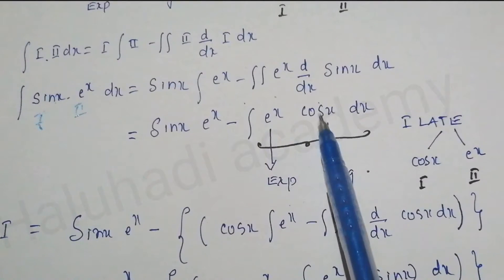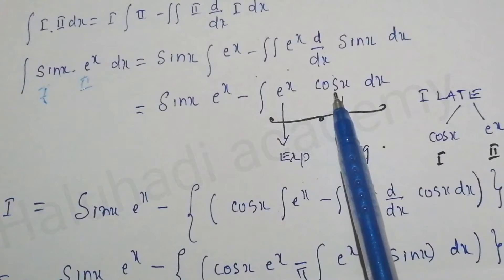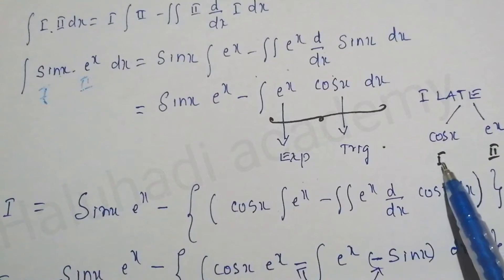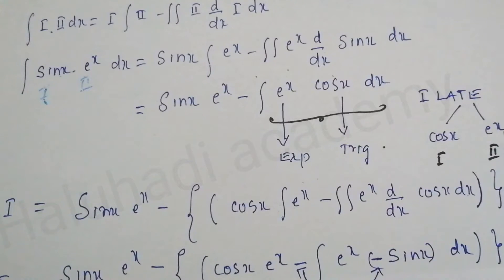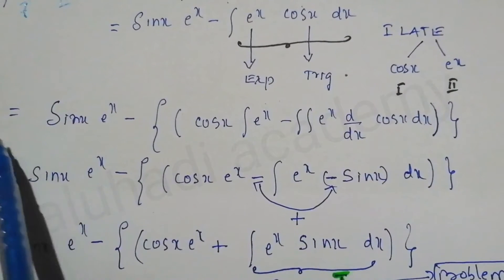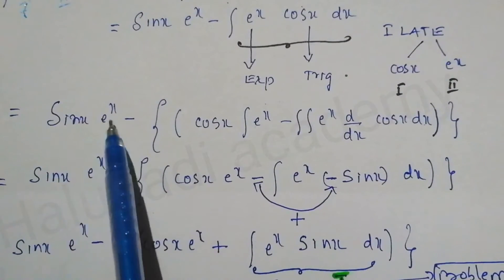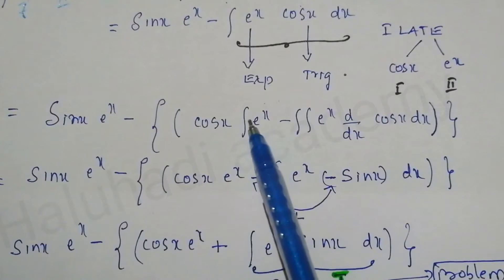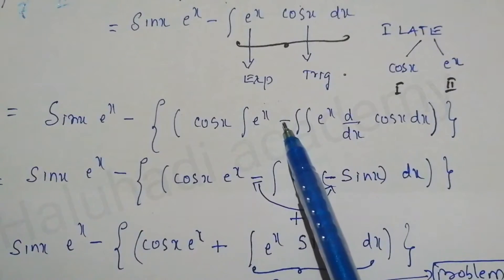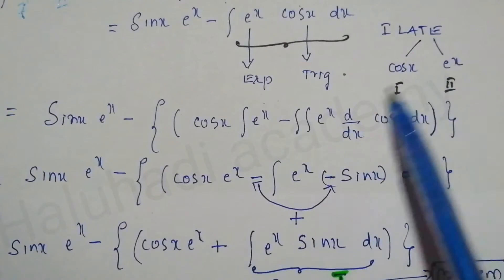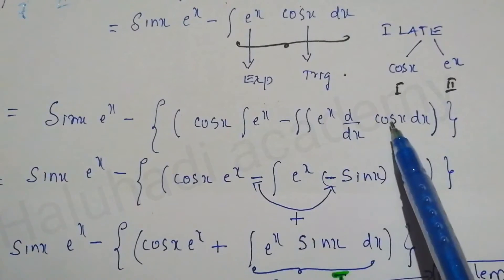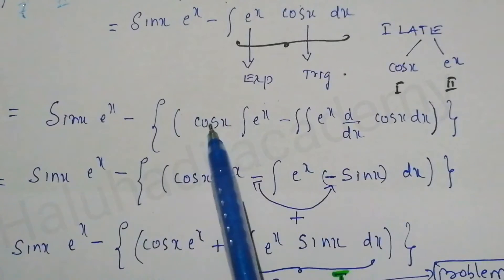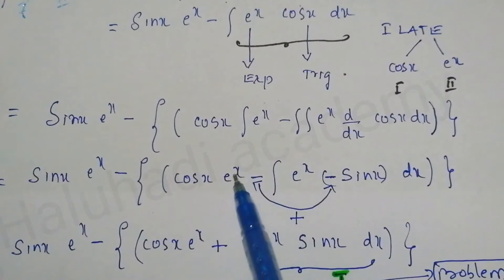We again have two functions, so we apply the ILATE rule again. First function is cos x and second function is e^x. So we get: sin x · e^x minus [cos x · e^x minus integral of e^x times the differentiation of cos x dx].